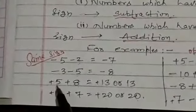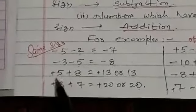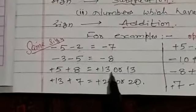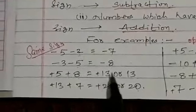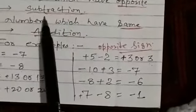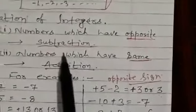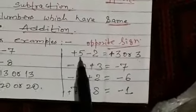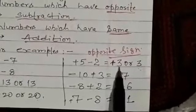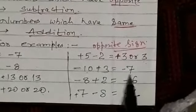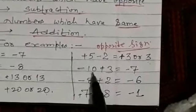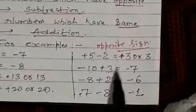Positive numbers are also added to each other: plus 5 plus 8 becomes plus 13, or simply 13. For opposite signs, you should use the subtraction method. Like plus 5 minus 2 becomes plus 3. Minus 10 plus 3 equals minus 7, because here opposite signs are written.